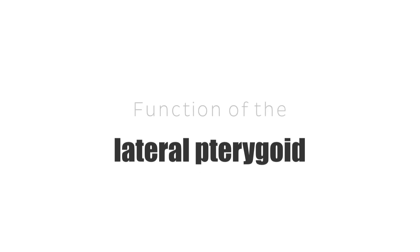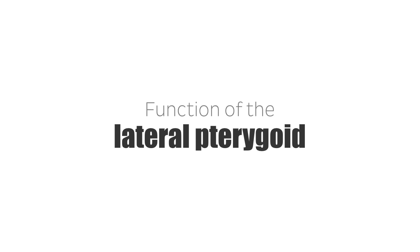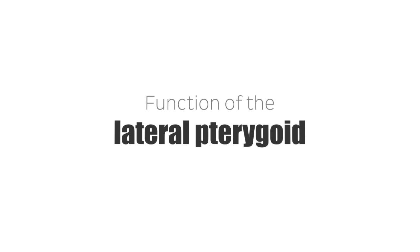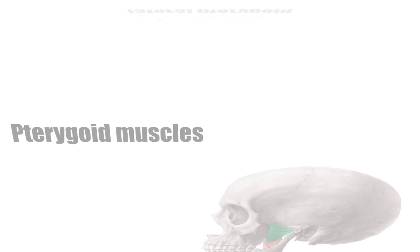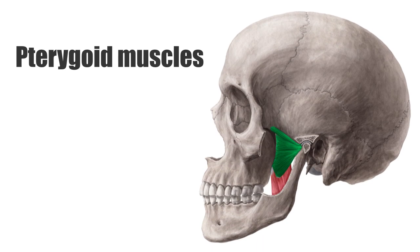Hello again, it's Matt from KenHub, and in this tutorial, we will discuss the function of the lateral pterygoid muscle. The pterygoid muscles, or wing muscles, are two jaw muscles located on the inner surface of the mandible.